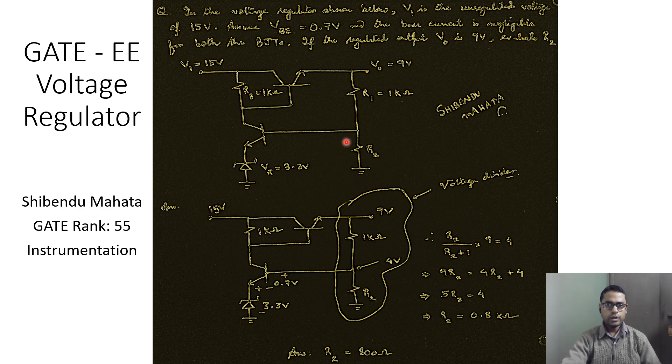Looking at the problem that is given here, this is the unregulated voltage of 15 volts, and over here on the output side we obtain a regulated output of plus 9 volts. So this is a 9 volt voltage regulator and the Zener diode that is given here has a breakdown voltage of 3.3 volts, and we are interested in finding out this value for R2.